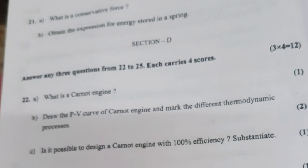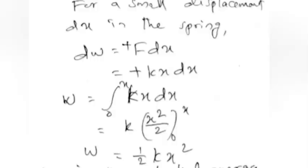Question 21a: What is a conservative force? 21b: Obtain the expression for energy stored in a spring. Answer 21a: If the work done by a force is independent of the path followed and depends only on the initial and final position, the force is conservative. Answer 21b: Restoring force F = −kx. For a small displacement dx, dW = F dx = −kx dx. W = ∫kx dx = kx²/2. Therefore potential energy of spring U = ½kx².